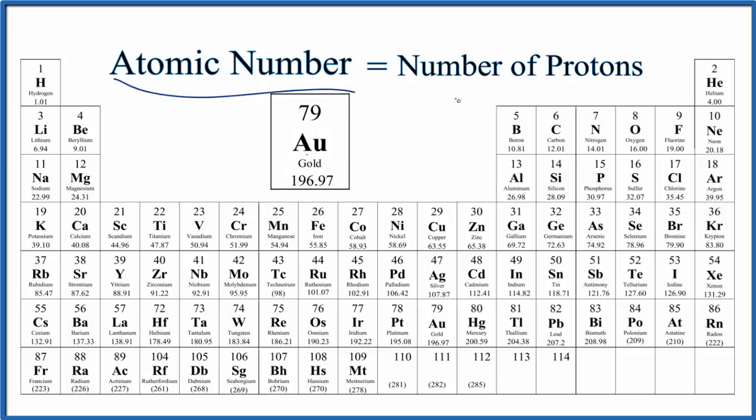The atomic number, that's equal to the number of protons. So gold, its atomic number is 79, and it has 79 protons.